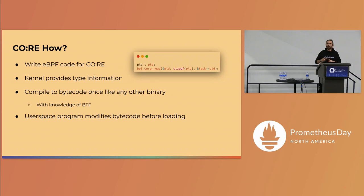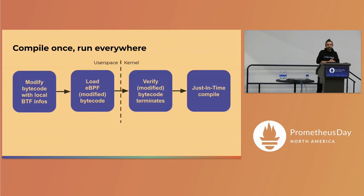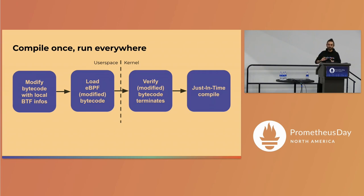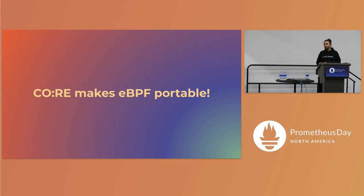This is achieved thanks to BTF — type definitions for the kernel. When compiling our program in the development environment we use our own BTF information, but when loading the program into the kernel we use BTF information from the kernel and perform relocations, ensuring the eBPF program has correct access to, for example, struct fields. This makes it much easier to compile and load programs to any Linux environment, though you do need to target certain minimum kernel versions. The loader does relocation magic and then compiles the program, making it super portable.